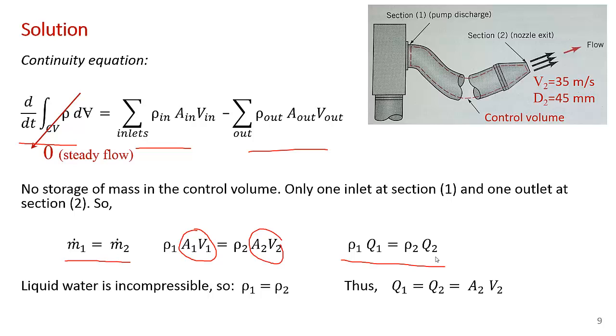We can combine these terms. Remember, AV is just the volume flow rate. We can rewrite them where ρ₁ times the volume flow rate at 1 equals ρ₂ times the volume flow rate at 2. In this case, we're talking about liquid water. Liquid water is incompressible. Its density doesn't change with pressure. So ρ₁ equals ρ₂, and we can cancel those terms. We end up with the volume flow rate in the hose being constant, Q₁ equals Q₂. At any cross section, we'd have the same flow rate. Since we have the area and velocity at section 2, we're going to evaluate the flow rate at section 2.